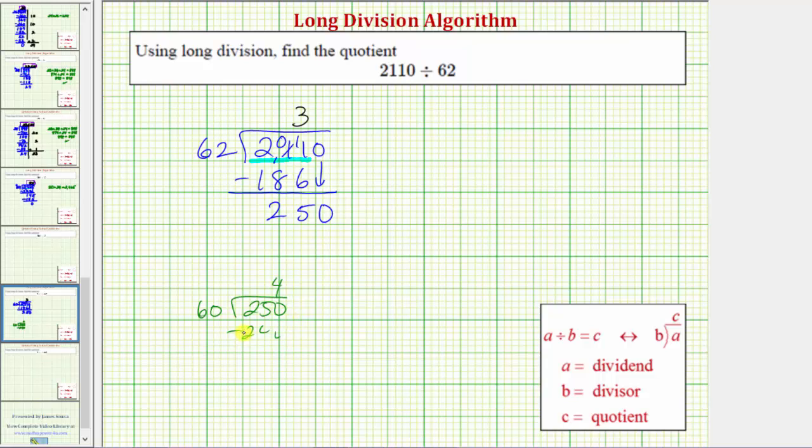Let's place a 4 in the quotient in the ones place value and multiply by the divisor. 4 times 2 equals 8, and 4 times 6 equals 24. Now we subtract. Notice the difference is 2, which is less than 62, so the 4 is correct. We've used all digits in the dividend, so this last difference is our remainder. Therefore, 2110 divided by 62 equals 34 with a remainder of 2.